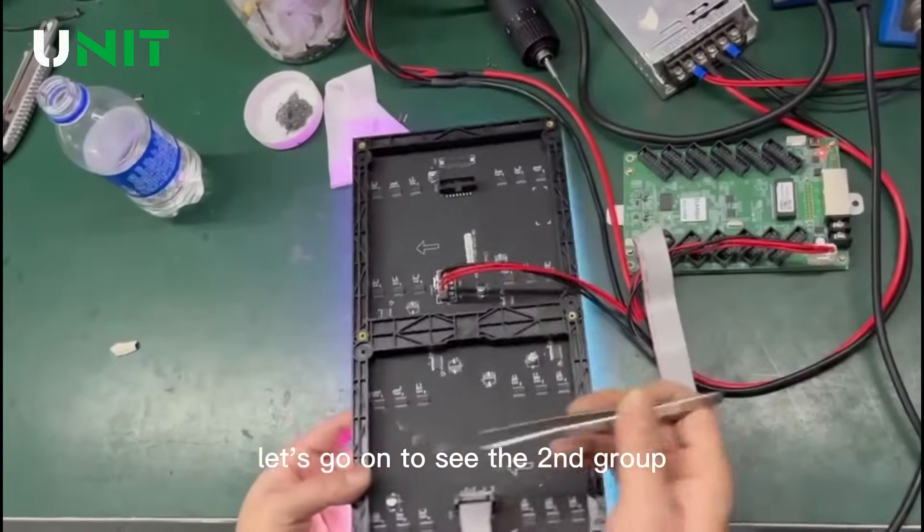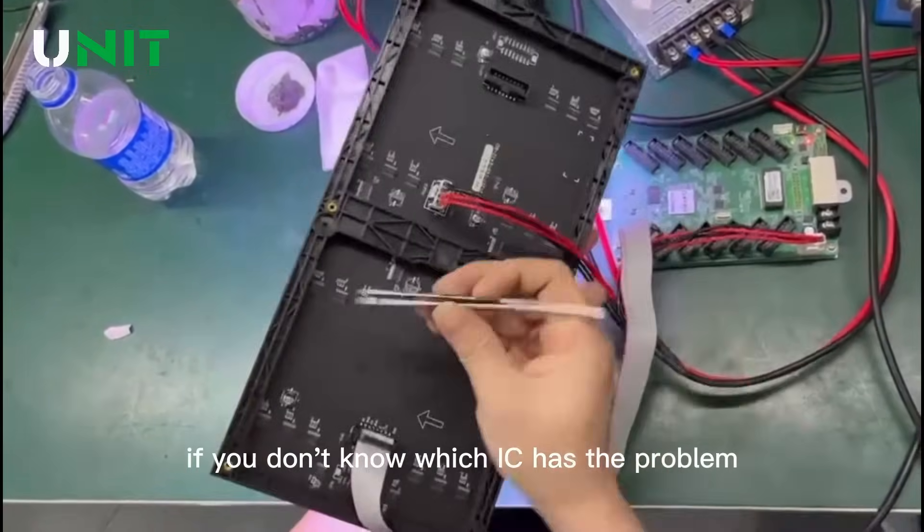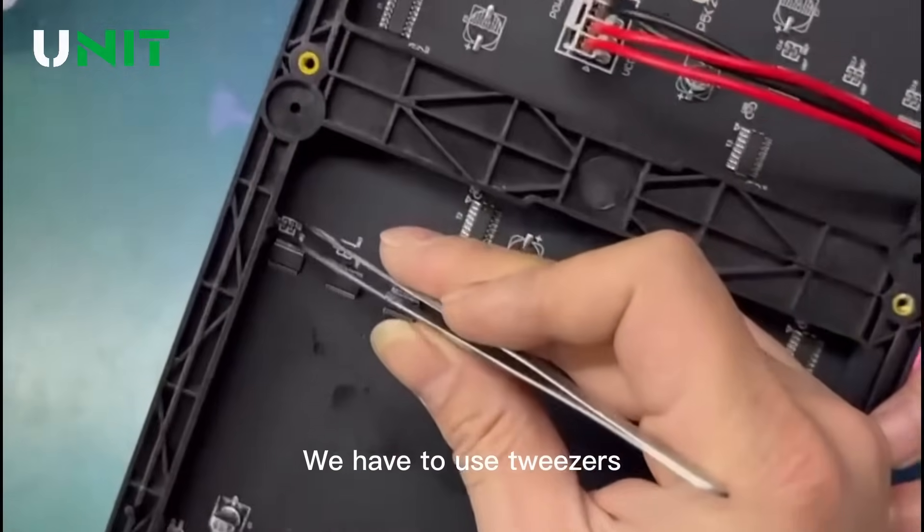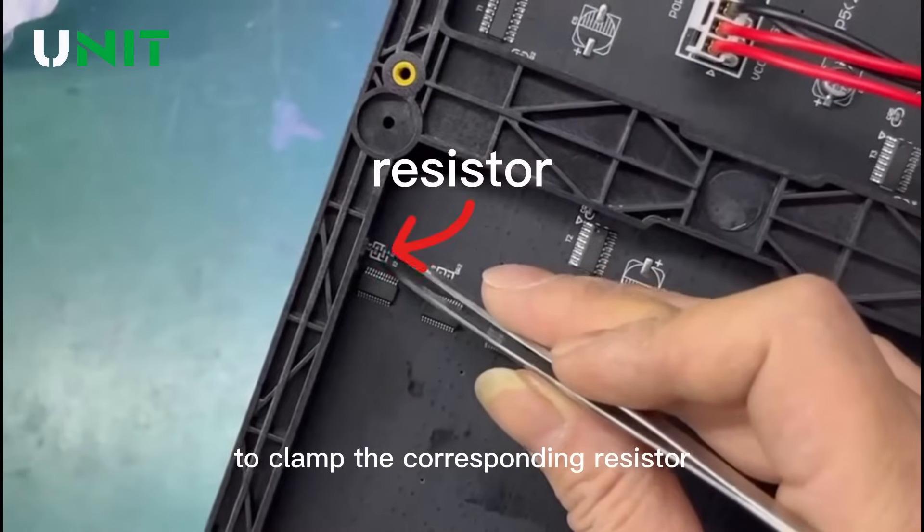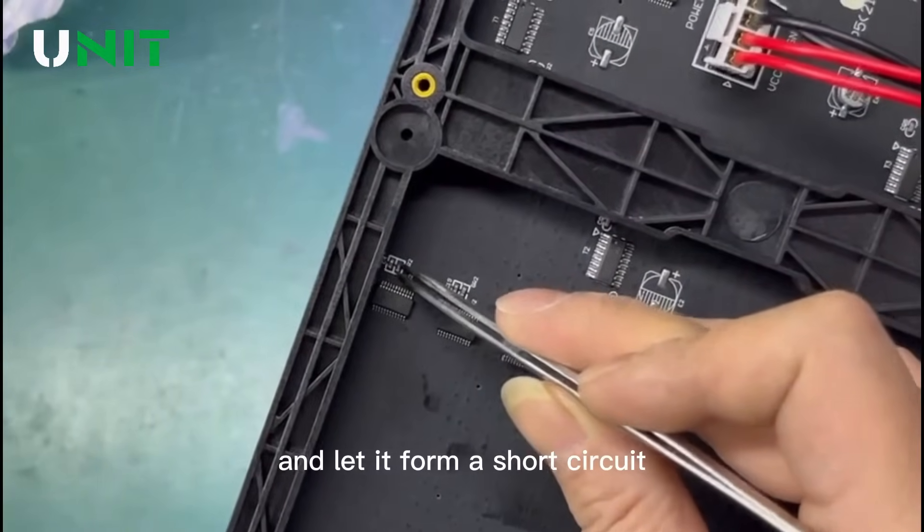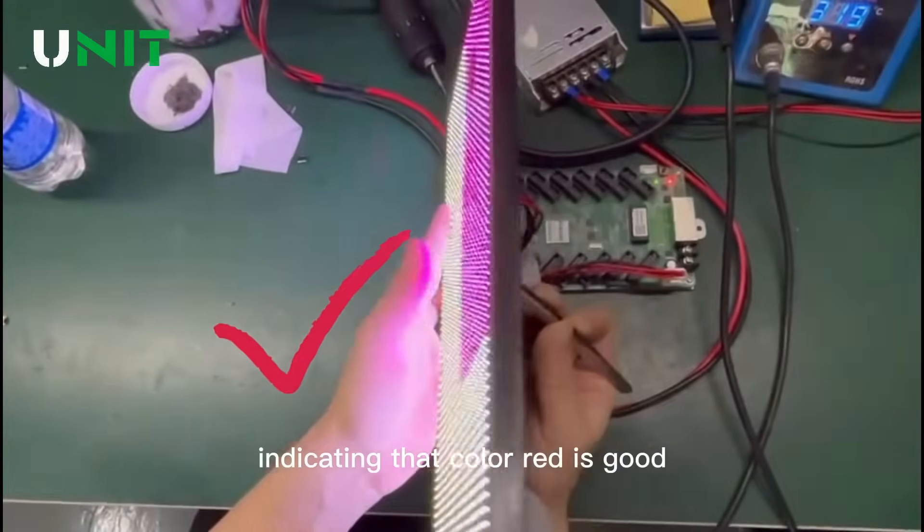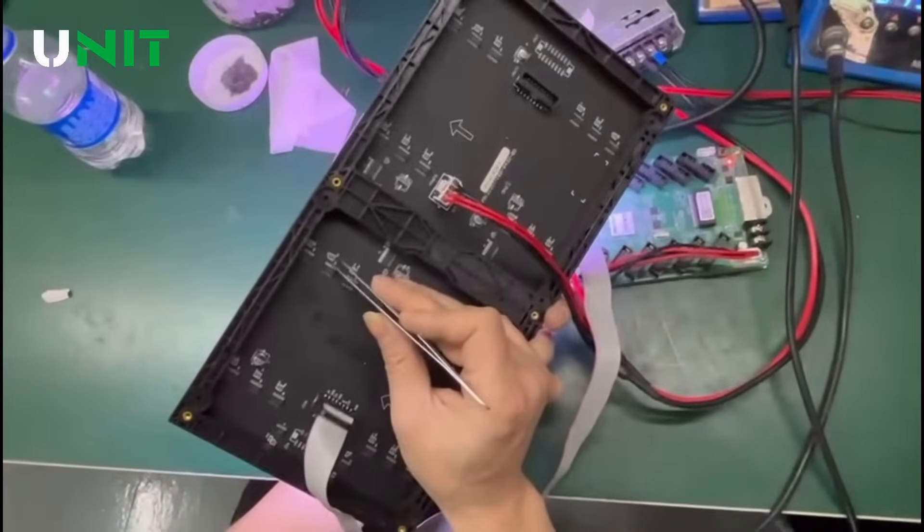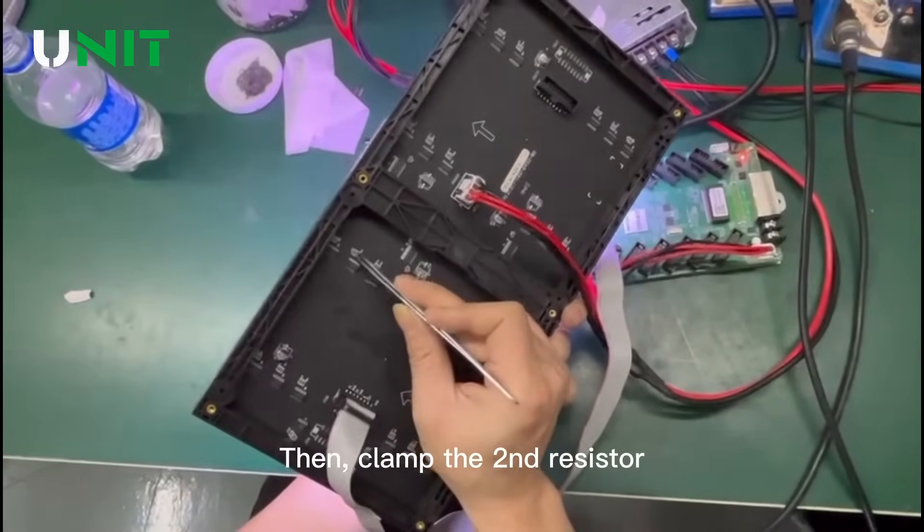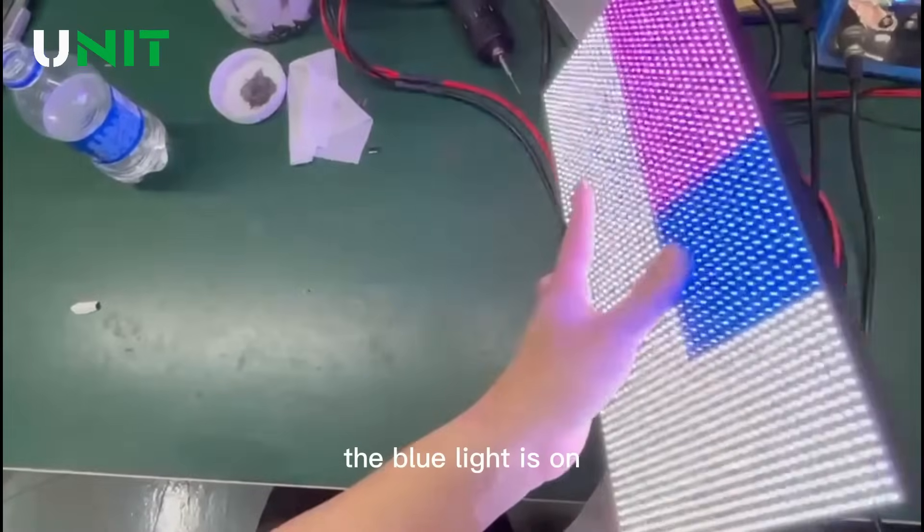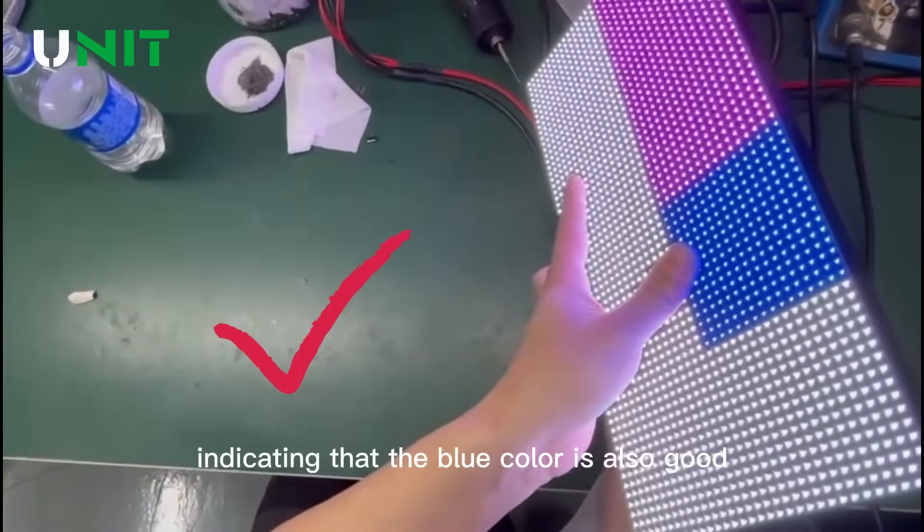Let's go on to see the second group. If you don't know which IC has the problem, we have to use tweezers to clamp the corresponding resistor and let it form a short circuit. We can see that the red is on, indicating that the red is good. Then clamp the second resistor. The blue light is on, indicating that the blue corner is also good.